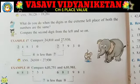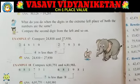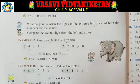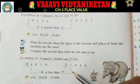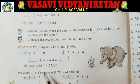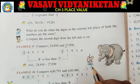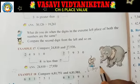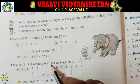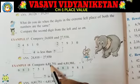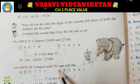Next, see example 18: Compare 6,81,751 and 6,81,981. First digit — compare. Next, second digit — compare. Now, here are 6-digit numbers and here also 6-digit numbers: 1, 2, 3, 4, 5, 6. Here also 6-digit numbers.